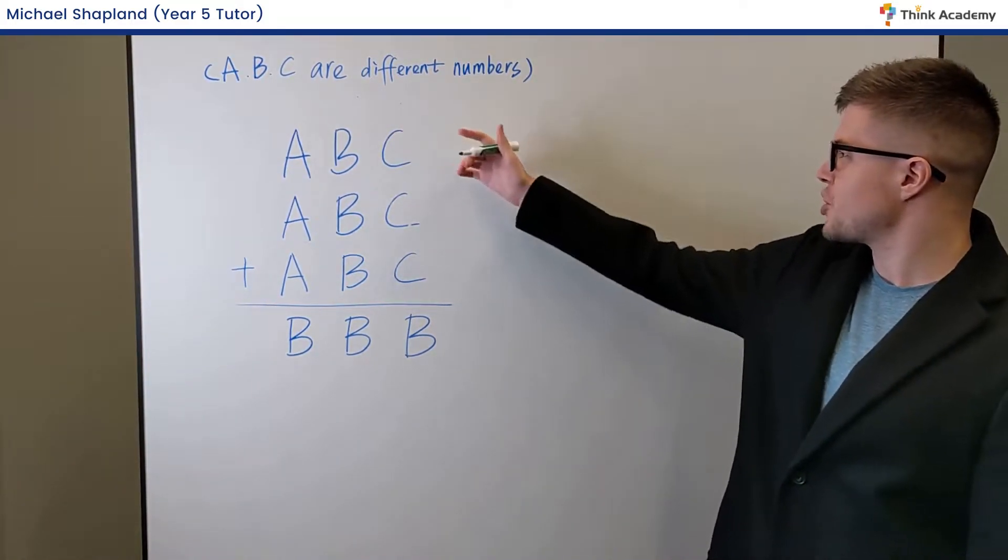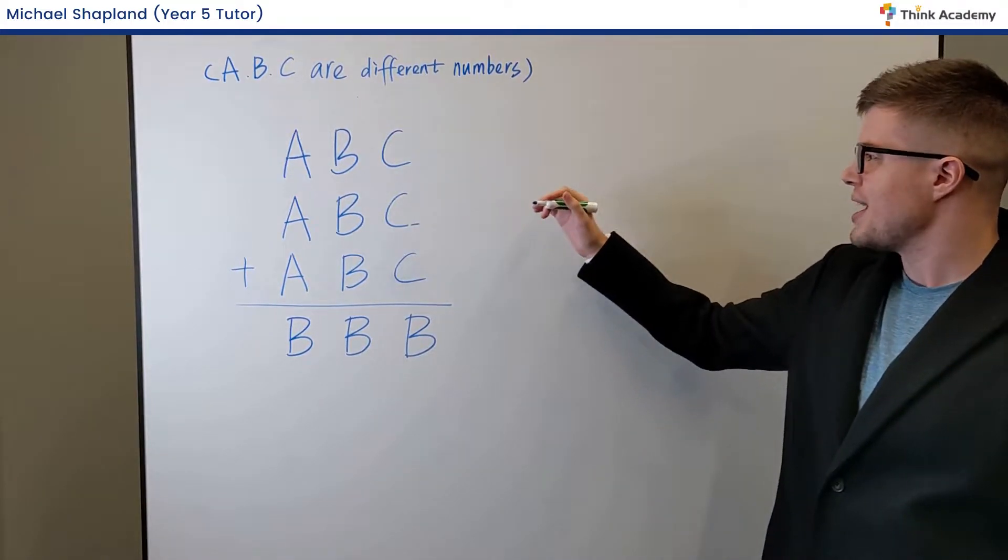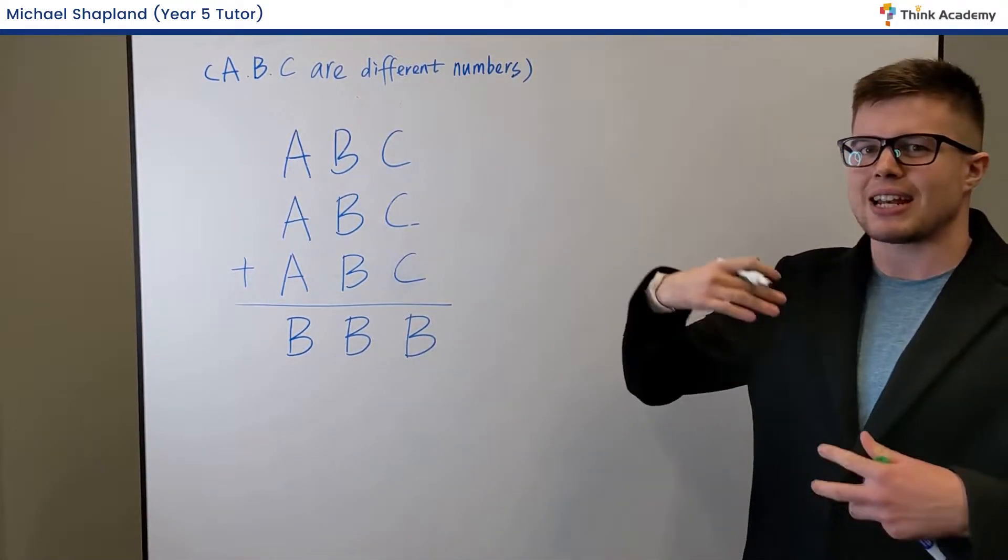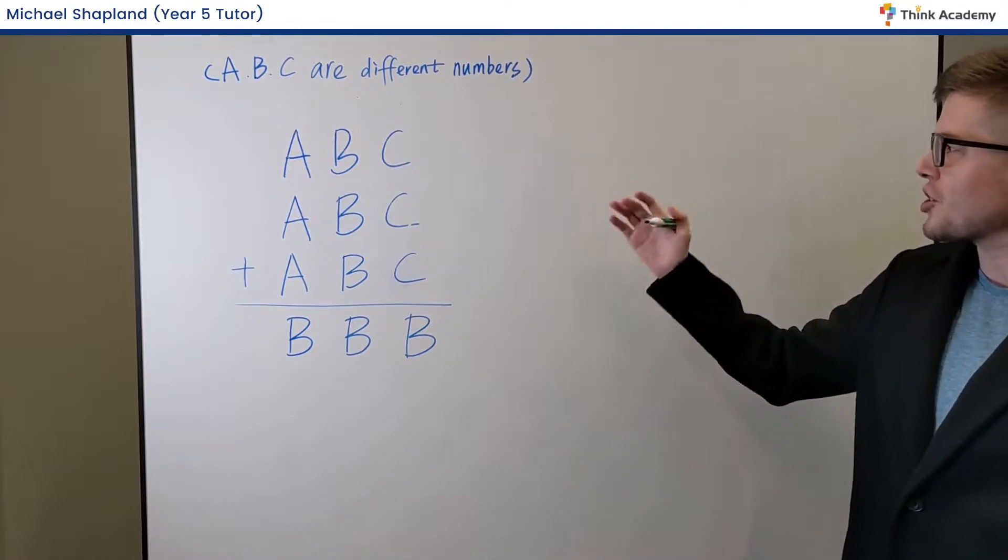As you can see here, a bit of a tricky one because we've got A, B and C. These are different values. And again, you may see this and think it needs a lot of trial and improvement.